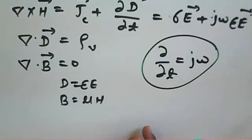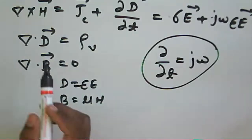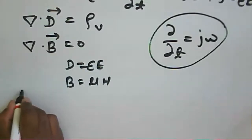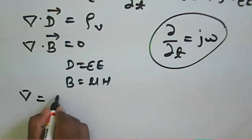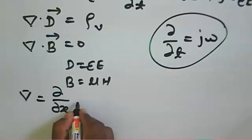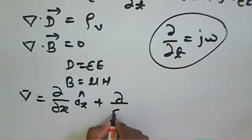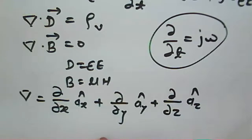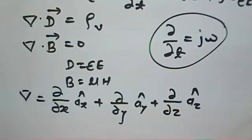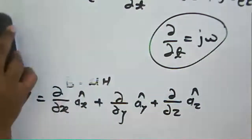The del operator can be written in Cartesian coordinates as (∂/∂x)a_x + (∂/∂y)a_y + (∂/∂z)a_z. Similarly it can be written in cylindrical or spherical coordinates. From these equations we want to obtain the wave equation, so we consider the phasor form.